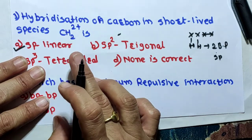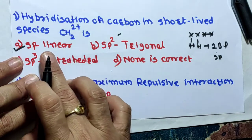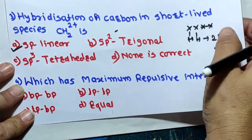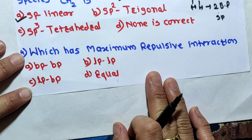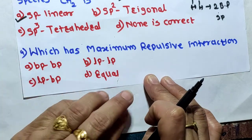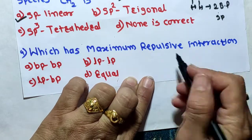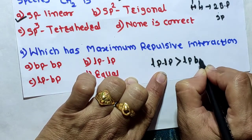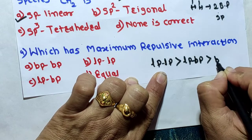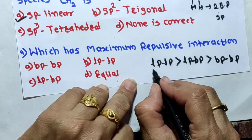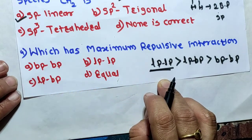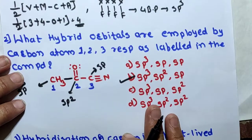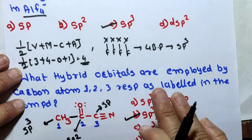In CH₂²⁺ the incomplete octet of carbon is short-lived and has sp hybridization, and the geometry is linear. Next MCQ: which has the maximum repulsive interaction? The order of repulsion is: lone pair–lone pair greater than lone pair–bond pair greater than bond pair–bond pair. So the highest repulsion occurs with lone pair–lone pair interaction — option B is our right answer. This concludes our MCQ session on chemical bonding.